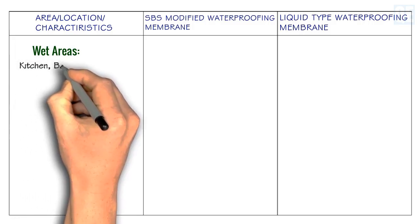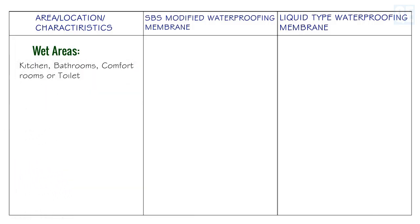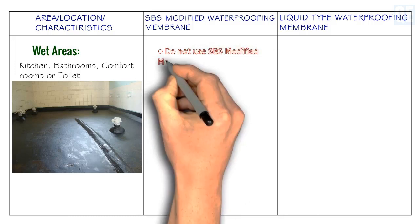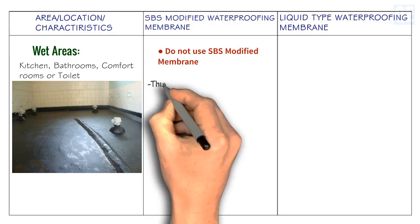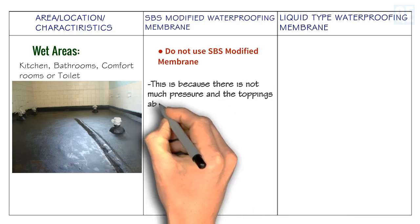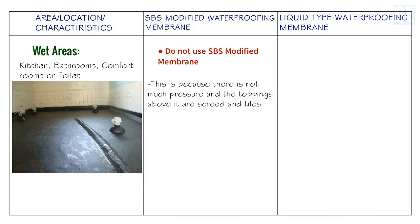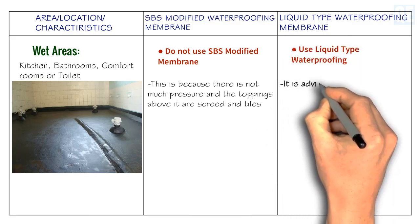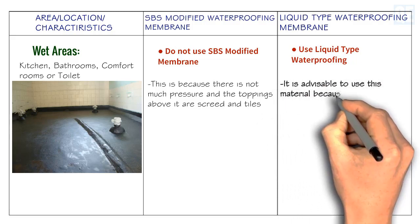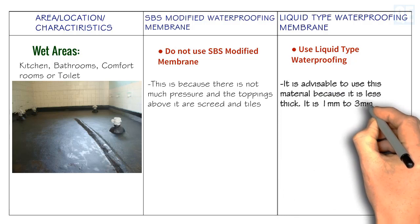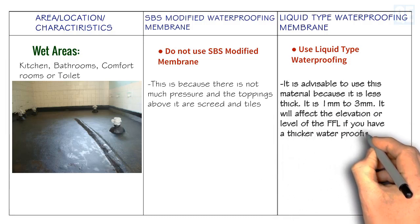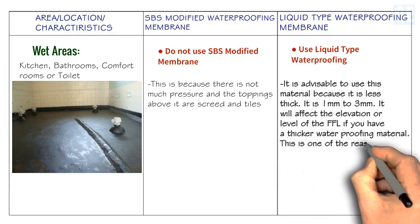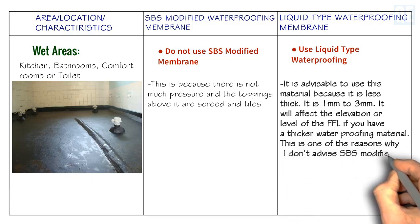For areas such as kitchens, bathrooms, and comfort rooms, do not use SBS modified membrane — it is not necessary in these areas because there is not much pressure and the toppings above are screed and tiles. Use liquid type waterproofing membrane instead, as it is advisable because it is less thick — only 1 mm to 3 mm. A thicker waterproofing material would affect the elevation or finished floor level (FFL).